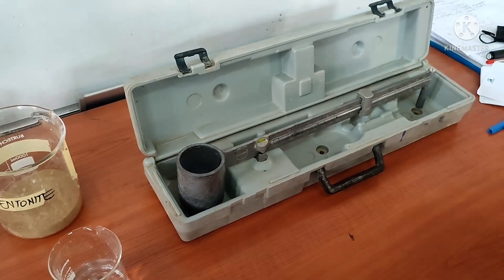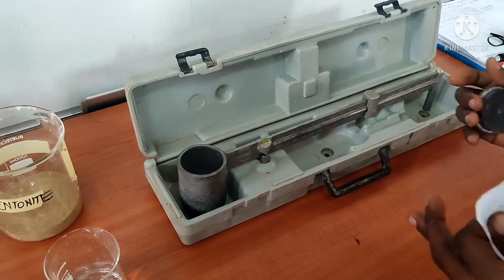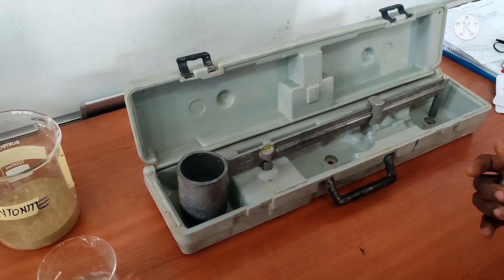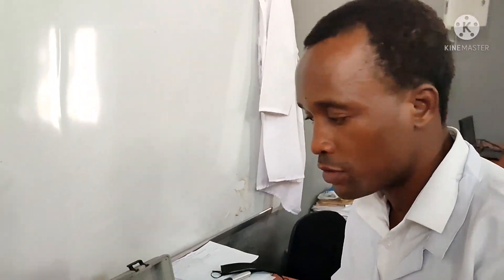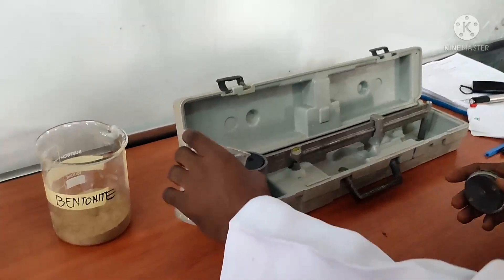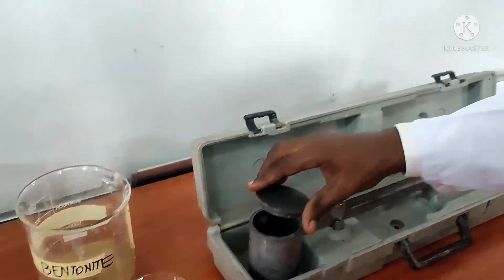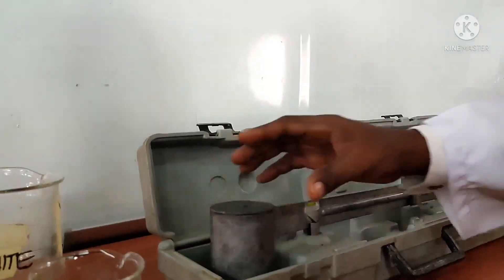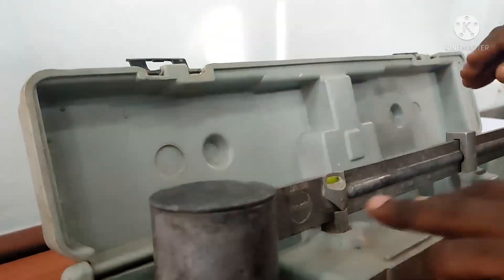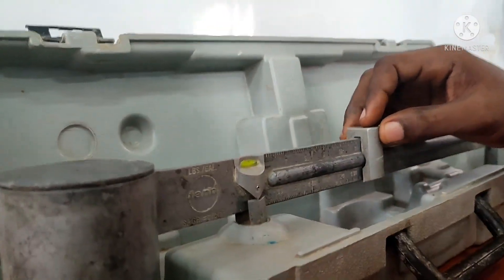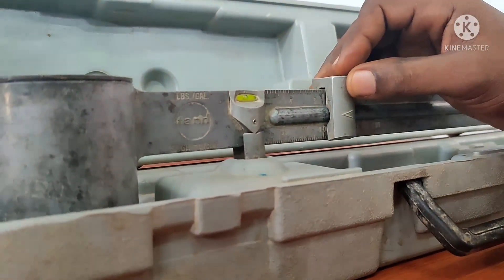The first thing we do is that we test the specific gravity of water. Here we are going to be using the American unit, which is 8.3 pounds per gallon. So we wipe it off, set it on the knife edge, and then turn the runner to 8.3 pounds per gallon.